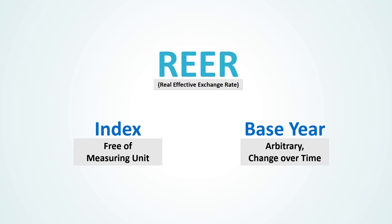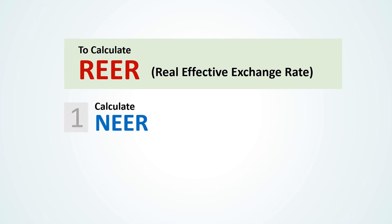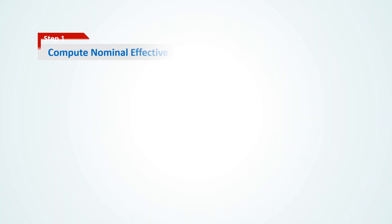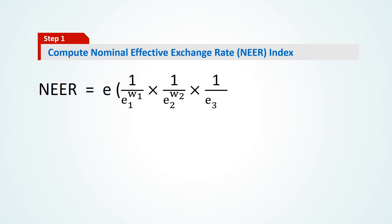It is important to note that the choice of the base year is arbitrary and subject to change over time. To calculate REAR, you first need to calculate a nominal effective exchange rate or NEAR and a relative price index or RPI. To compute NEAR, since there are many countries involved, we first take the weighted average of all nominal exchange rates of all countries in the basket vis-à-vis one currency such as the US dollar.